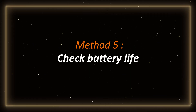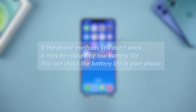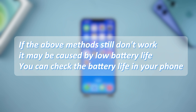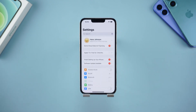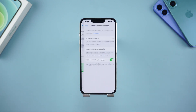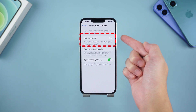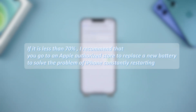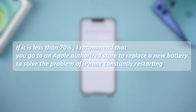Method 5: Check battery life. If the above methods still don't work, it may be caused by low battery life. You can check the battery life in your phone — open Settings and find the Battery option, then click Battery Health. This will show your maximum battery capacity. If it is less than 70%, I recommend going to an Apple Authorized Store to replace the battery to solve the problem of your iPhone constantly restarting.